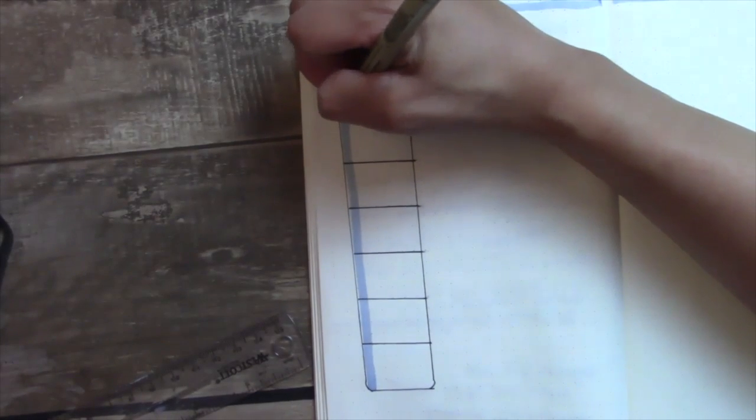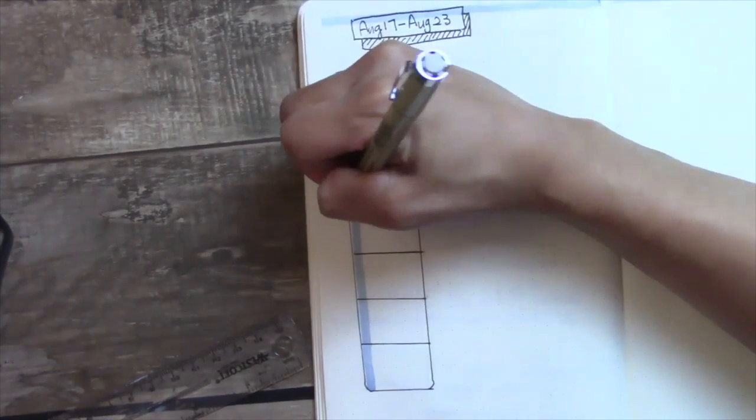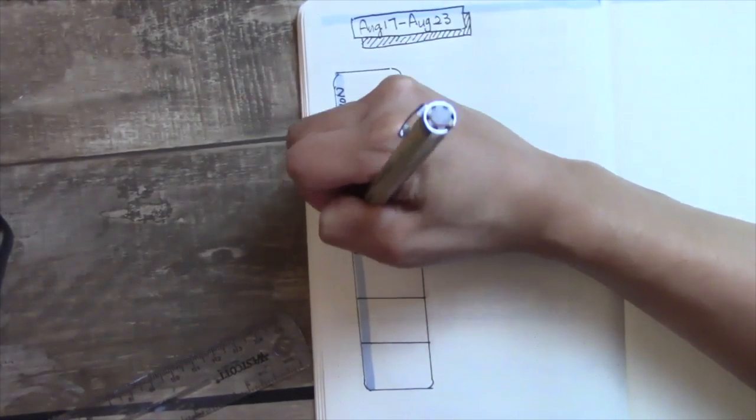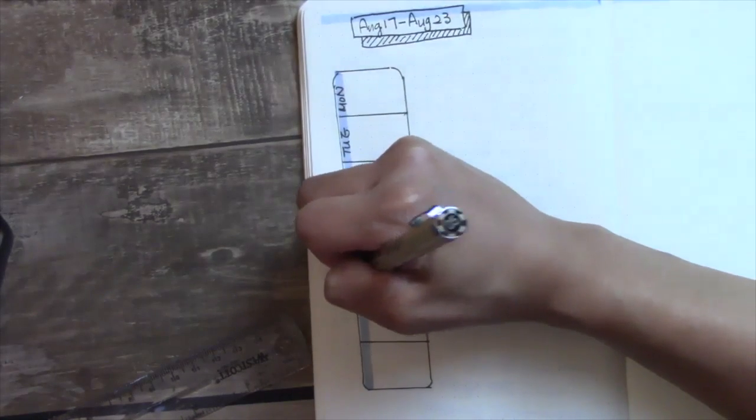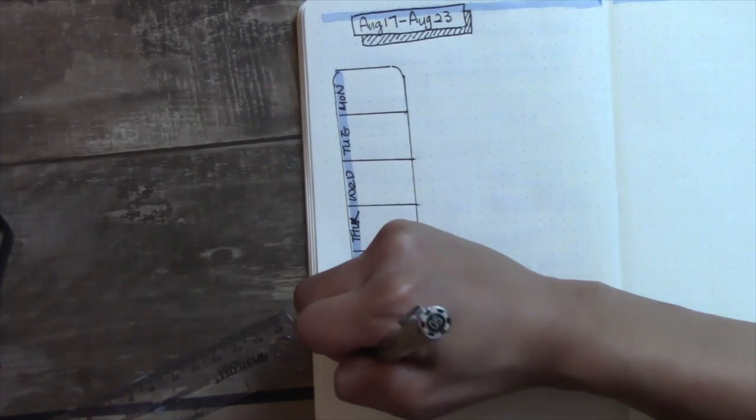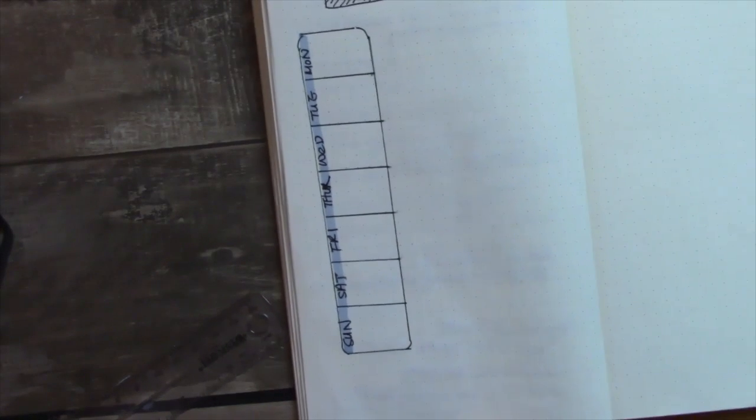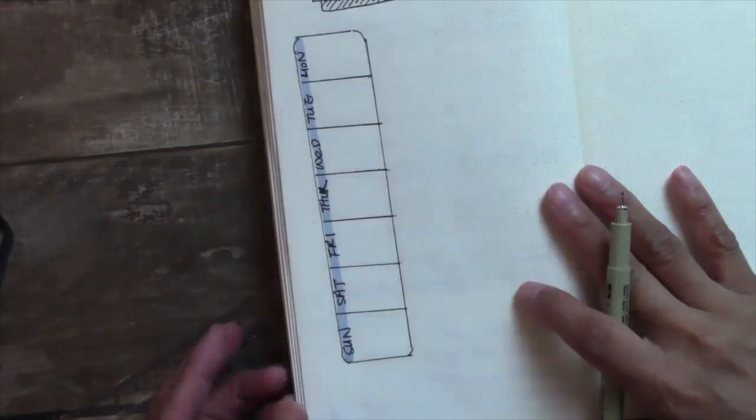So try and fix that, and this is where our negative self-talks would come in: 'Oh it's not perfect, I gotta go fix it, I gotta make it straight.' Well, sometimes the imperfection is actually beautiful. Now I have a special page that has a crooked box.